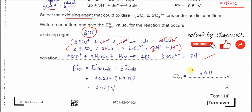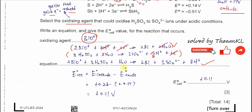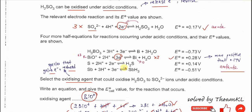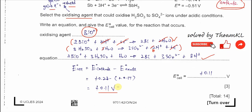Finally, calculate the E°cell for this reaction. The cathode is the half-equation that gains electrons (BiO⁺ reduction, E° = +0.28 V), and the anode is the one that releases electrons (H₂SO₃ oxidation, E° = +0.17 V), since oxidation occurs there. Using E°cell = E°cathode − E°anode gives 0.28 − 0.17 = positive 0.11 volts.